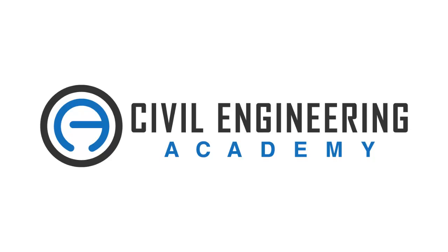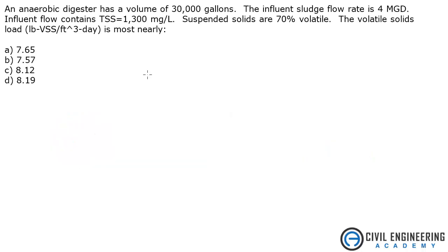Civil Engineering Academy, helping you in your journey to pass the P.E. Welcome to Civil Engineering Academy. Today we are solving a problem from Water Resources. This is an environmental problem and it states an anaerobic digester has a volume of 30,000 gallons.